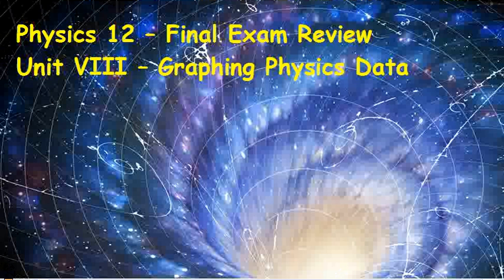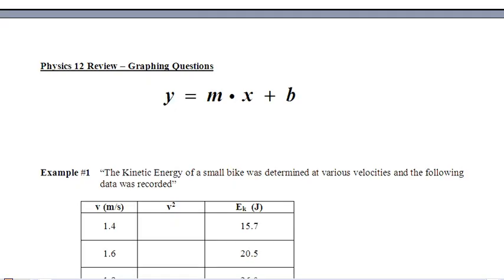This is the last of our Physics 12 Final Exam Review videos. In this one, we're going to take a look at the process of graphing physics data and how we can manipulate some of the axes in order to get everything to graph in a nice, beautiful, straight line. It all comes back to that straight-line equation from Math 10: y equals mx plus b.